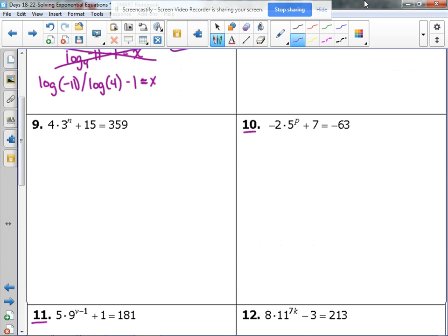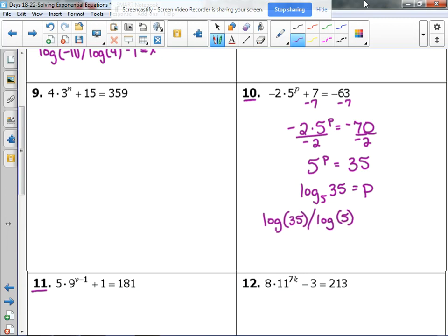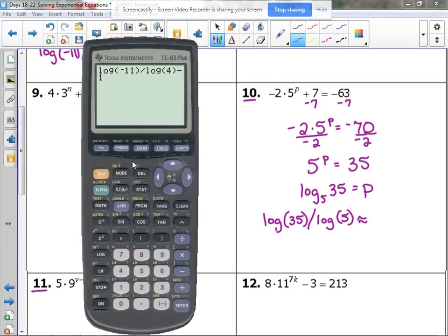Okay. Let's look at another one. Number 10 here. We need to isolate this. Again, the first step is to subtract the 7. Purely coincidental. Then we divide by negative 2. 5 to the P is equal to 35. We need to write this in log form. Log base 5 of 35 is equal to P. So, that's our exact answer. We are going to write out our change of base so that we can get an approximate answer so that we can plug it back in and check. So, let's get that out of the way. Log 35 divided by log 5.